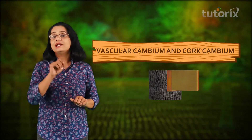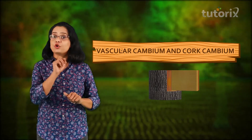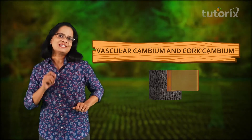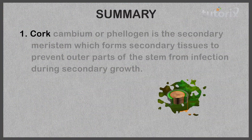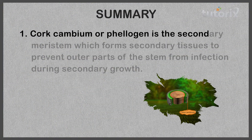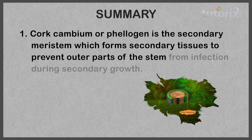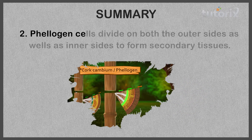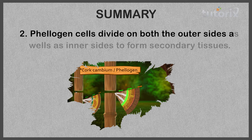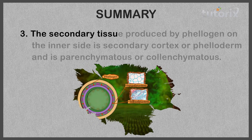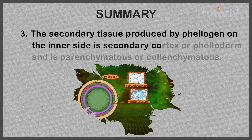To summarize: cork cambium or phelogen is the secondary meristem which forms secondary tissues to prevent outer parts of the stem from infection during secondary growth. Phelogen cells divide on both the outer and inner sides. The secondary tissue on the inner side is secondary cortex or pheloderm, which is usually parenchymatous or collenchymatous.